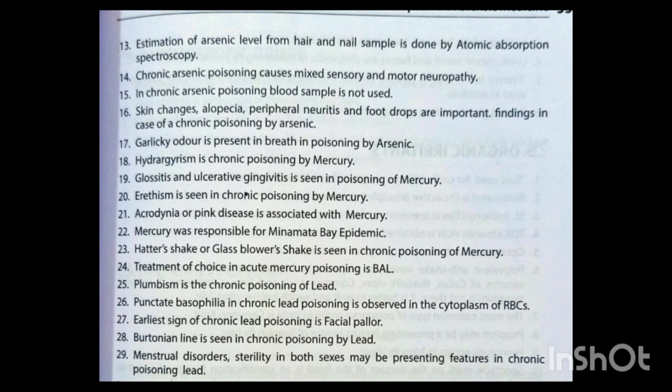Hydrargyrism is chronic poisoning by mercury. Glossitis and ulcerative gingivitis are seen in mercury poisoning. Erethism is seen in chronic mercury poisoning. Acrodynia or pink disease is associated with mercury poisoning. Mercury was responsible for the Minamata Bay epidemic. Hatter's shake or glassblower's shake is seen in chronic mercury poisoning. Treatment of choice in acute mercury poisoning is BAL (dimercaprol). Plumbism is chronic poisoning by lead. Punctate basophilia in chronic lead poisoning is observed in the cytoplasm of RBCs. Earliest sign of chronic lead poisoning is facial pallor.